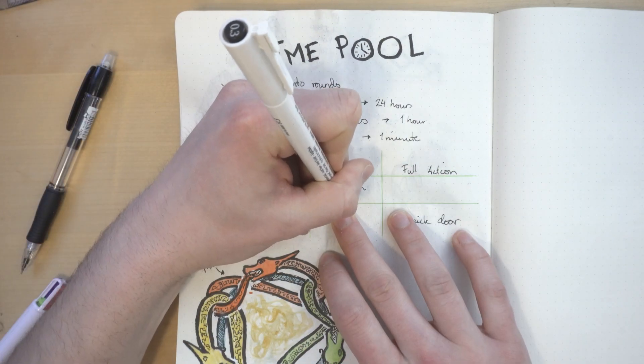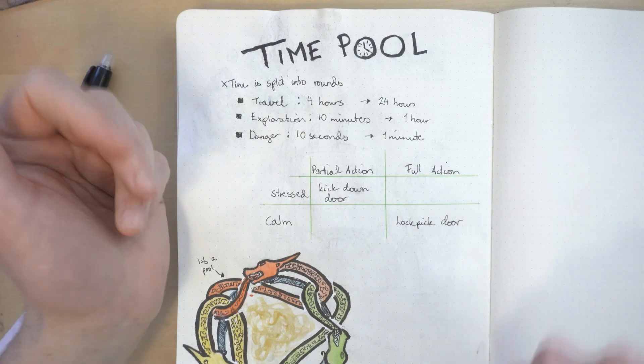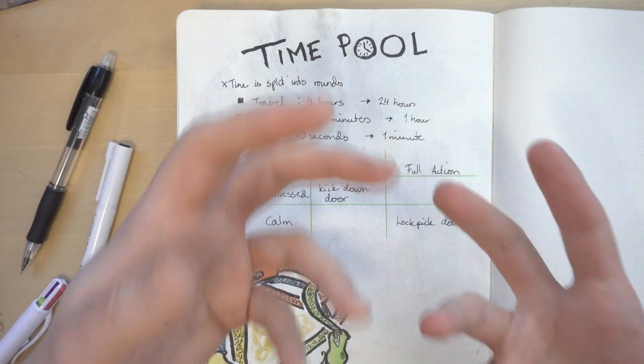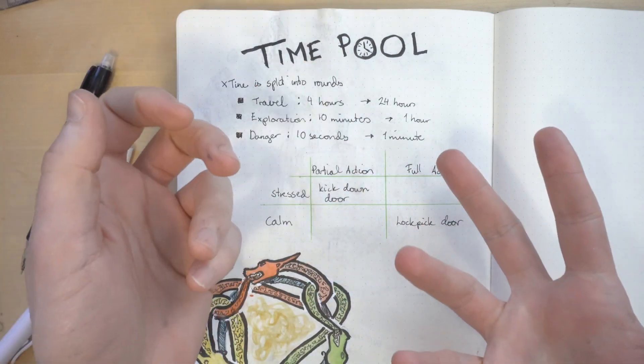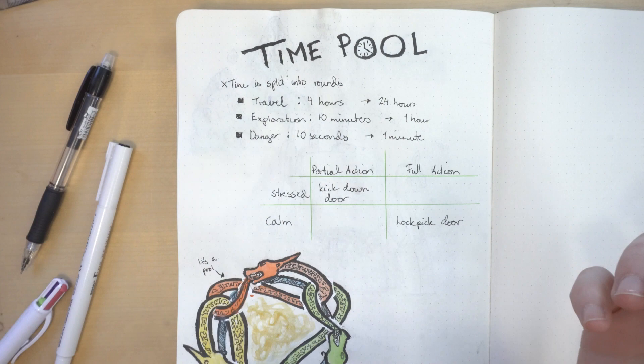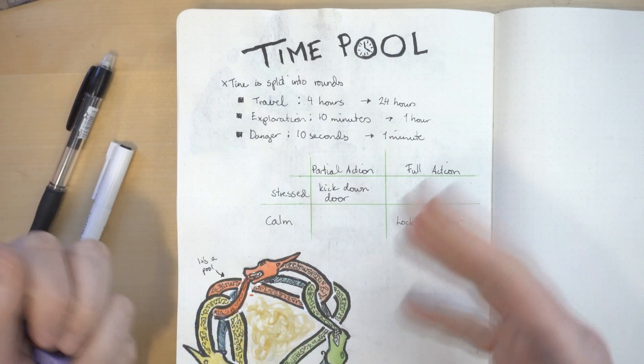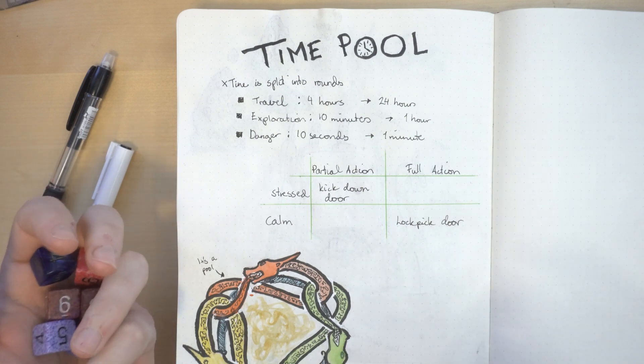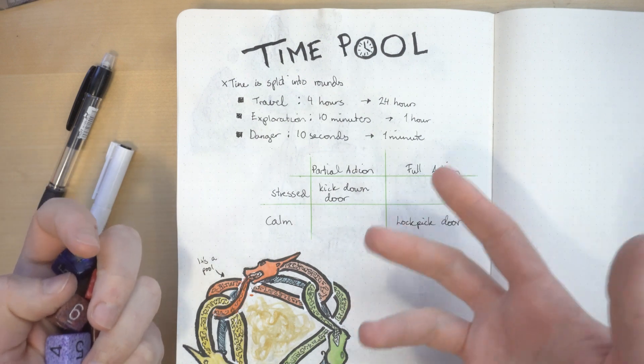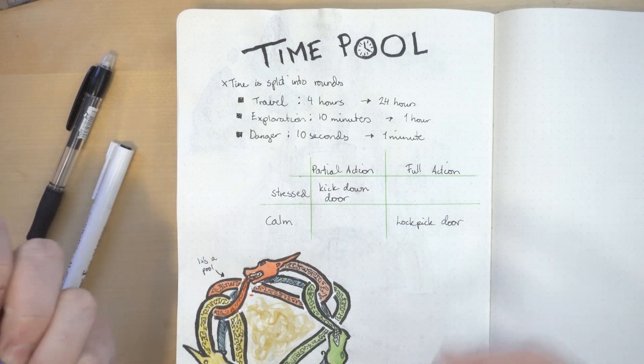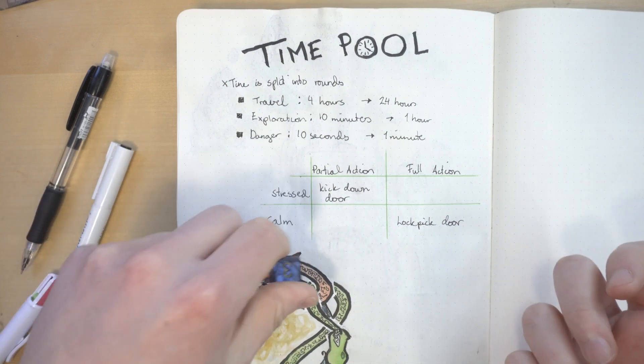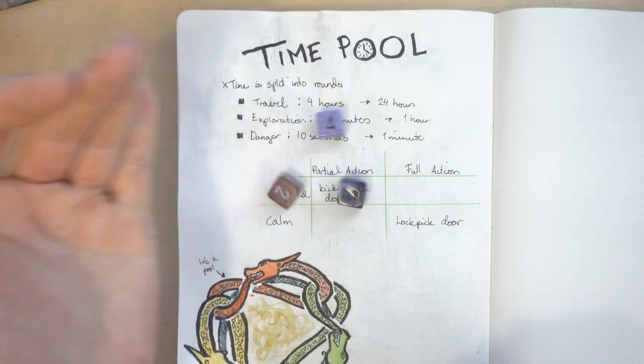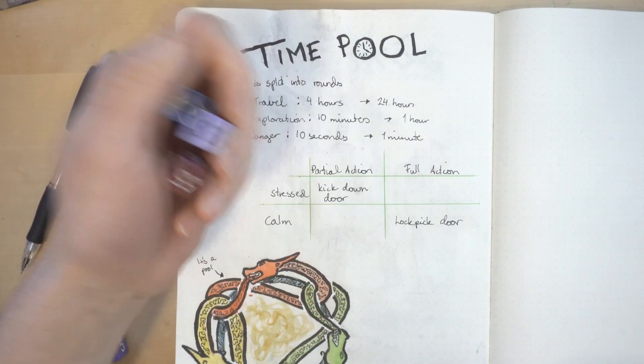Or you can kick the door down as a stressed partial action. It only takes 30 seconds, but it's loud and you might fail. Doing a calm action does nothing. Doing a stressed action prompts a complication roll. And this is where the meaningful decisions come in. Do you want to take calm actions which usually have a high success rate or even automatically succeed but that are time-consuming, or do you want to rush through things which is more risky and more dangerous?